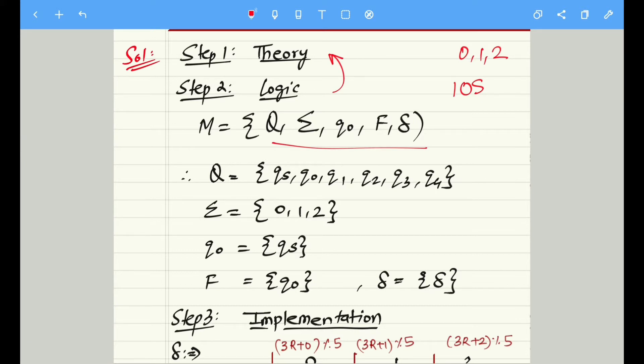Q stands for the number of states - finite amount of states. As we are dividing a number by 5, there will be five states each corresponding to the five remainder values along with the initial state Qs. So in total there will be six states: Qs, Q0, Q1, Q2, Q3, and Q4. The inputs will be 0, 1, and 2 because we are talking about ternary numbers.